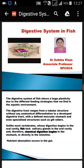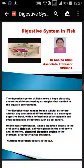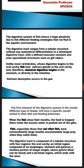As we have seen in most vertebrates, digestion begins in the oral cavity. But fish lack salivary glands in the oral cavity — salivary glands are absent. Therefore, chemical digestion begins in the stomach or directly in the intestine or gut. Nutrients are absorbed within the gut only. The main characteristic difference seen in fishes compared to other vertebrates is that they don't have salivary glands in the oral cavity.